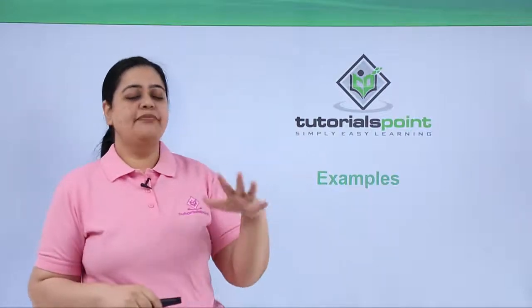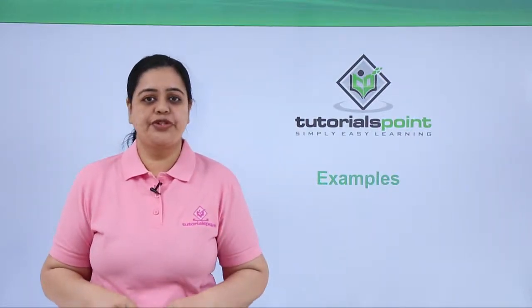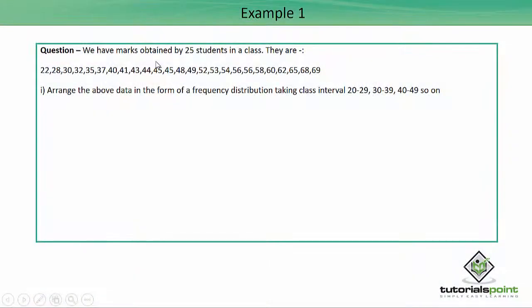Now let's do a few examples on frequency distribution. The first example gives marks obtained by 25 students in a class. We have been given this series, and we have been told to arrange the data in the form of a frequency distribution taking class intervals 20 to 29, 30 to 39, 40 to 49, and so on. We can convert the given data into a frequency distribution.